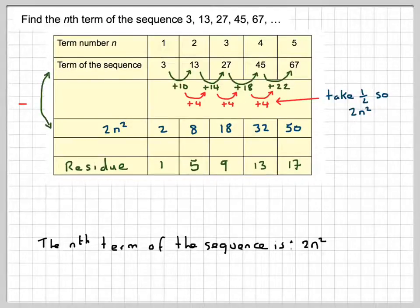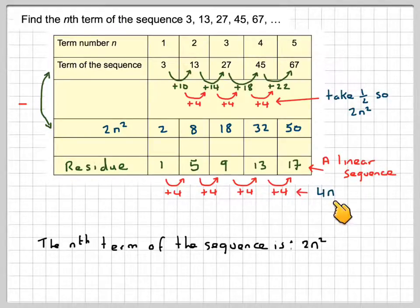Now, if we look at the differences of this new sequence, we'll actually see that this is a linear sequence. Because all we're doing is we're adding 4 to the previous term. And we know how to find the nth term of a linear sequence. So the next bit is 4n. So the next bit we need to put in here is 4n.